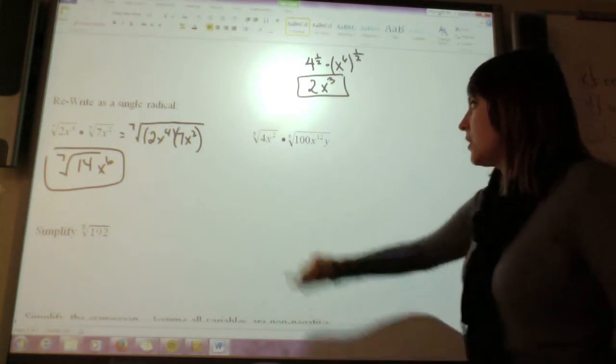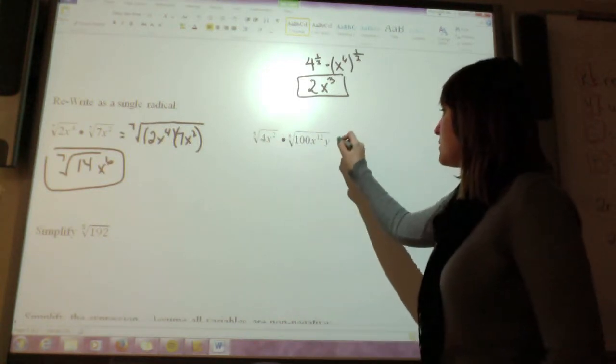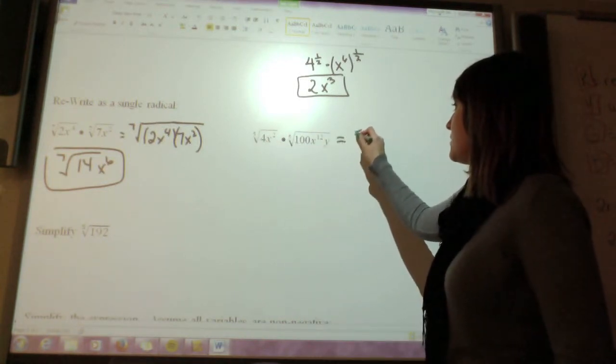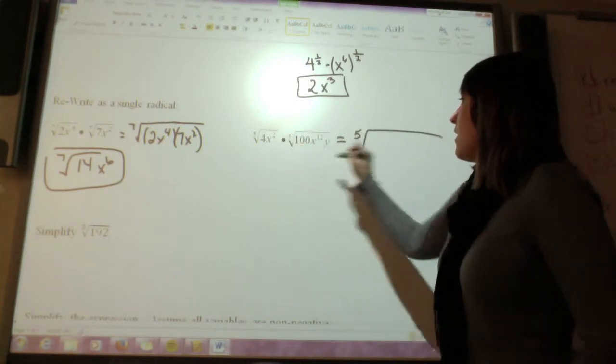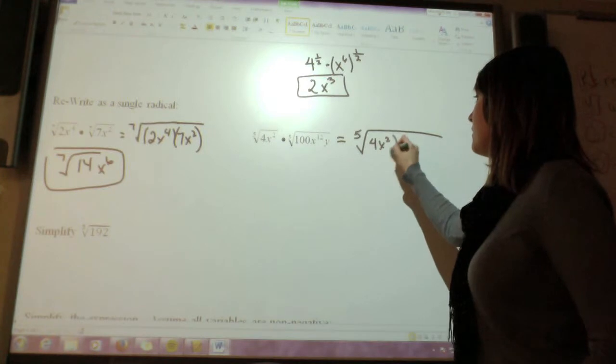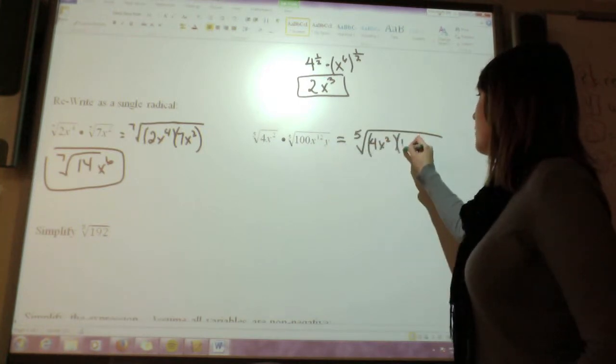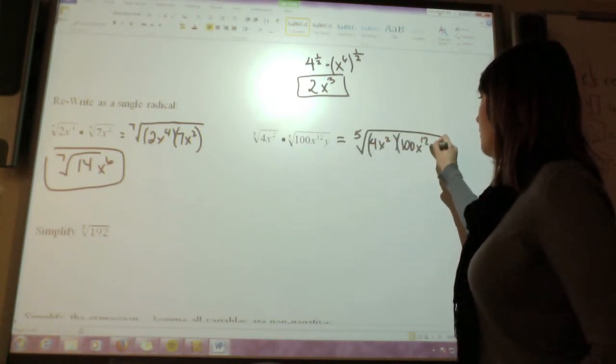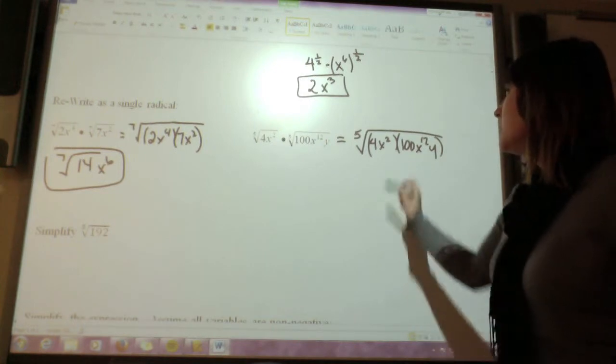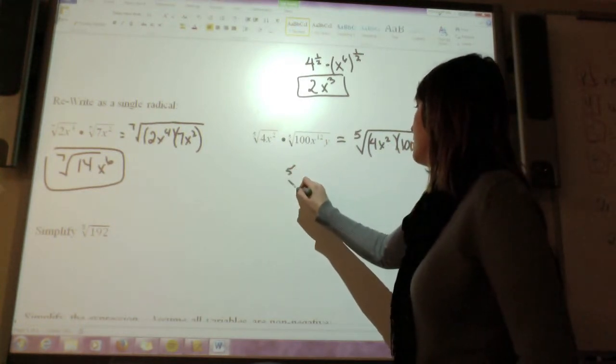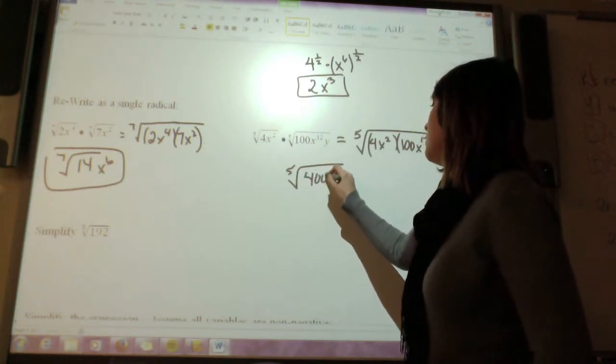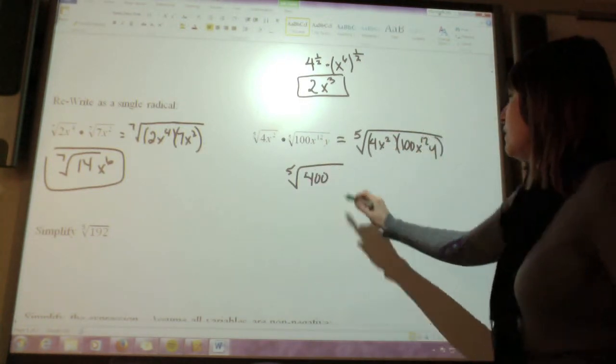Okay, I can do the same thing over here. Here, I notice that both of these are fifth roots, so if both of those are fifth roots, I can combine those by multiplying them inside the root. So I've got 4x squared times 100x to the twelfth y. So if I take 4 times 100, that gives me 400.